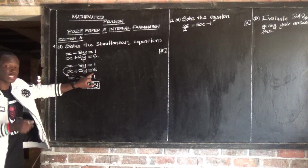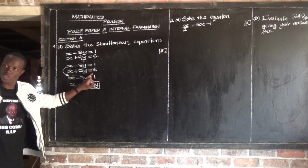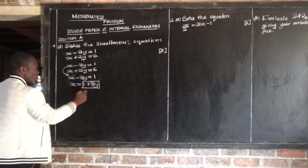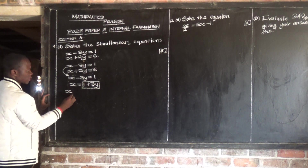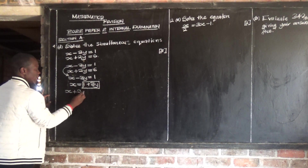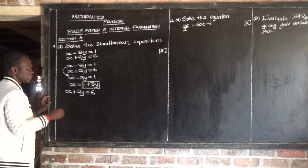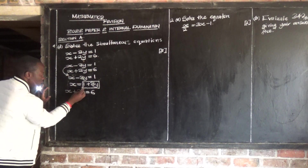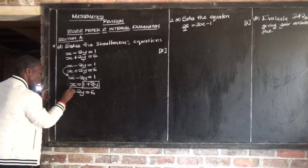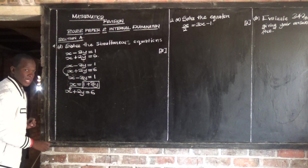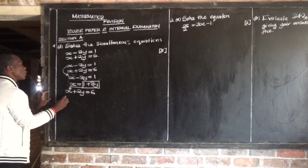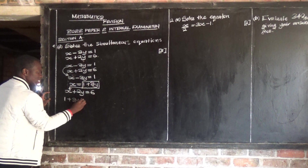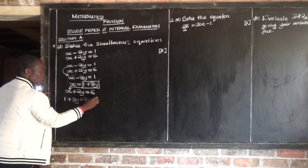So what I'm going to do in equation 2, where there is x, I'm going to substitute — that's why it's called the substitution method. Where there is x in this other equation, I'm going to put 1 plus 3y. So equation 2 is x plus 2y equals 6. Since I have the value of x, where there is x, I put 1 plus 3y, then plus 2y is equal to 6.